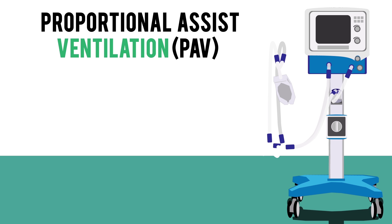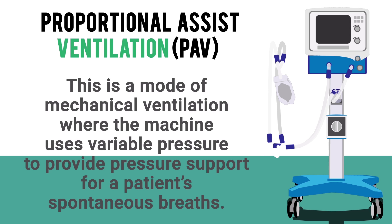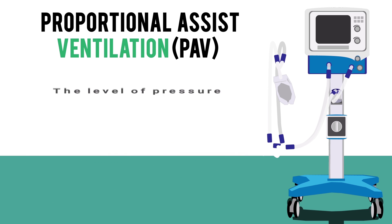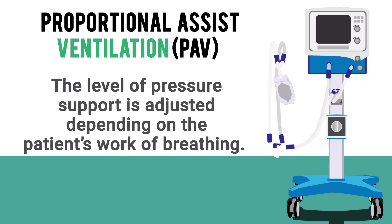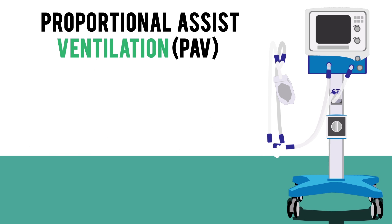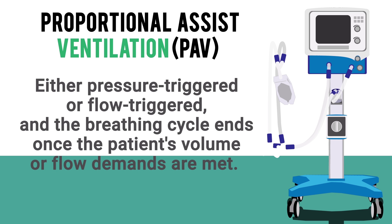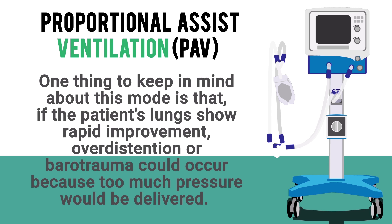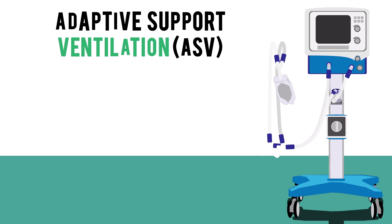Next we have PAV, or proportional assist ventilation. This is a mode where the machine uses variable pressure to provide pressure support for the patient's spontaneous breaths. The level of pressure support is adjusted depending on the patient's work of breathing. PAV can be pressure-triggered or flow-triggered, and the breathing cycle ends once the patient's volume or flow demands are met. One thing to keep in mind is that if the patient's lungs show rapid improvement, overdistention or barotrauma could occur because too much pressure would be delivered.